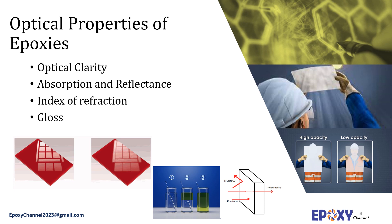Another optical property is the index of refraction. Upon cure, the refractive index — or index of refraction — is a value calculated from the ratio of the speed of light in a vacuum to that of a second medium of greater density, in our case the epoxy. This value normally ranges from 1.5 to 1.65.